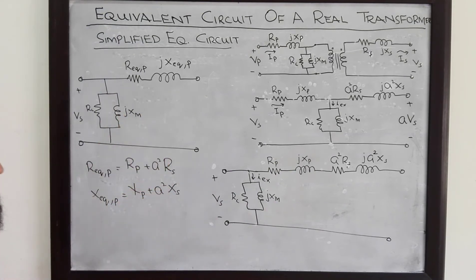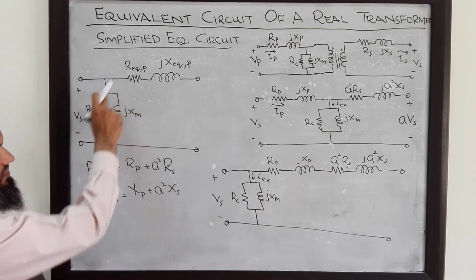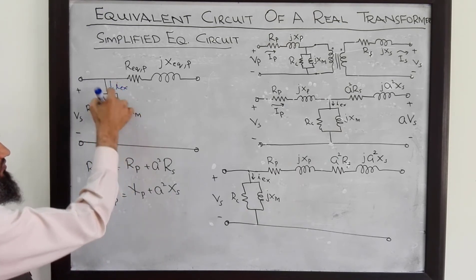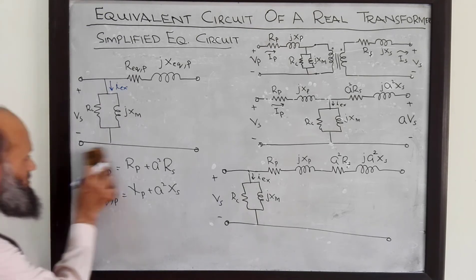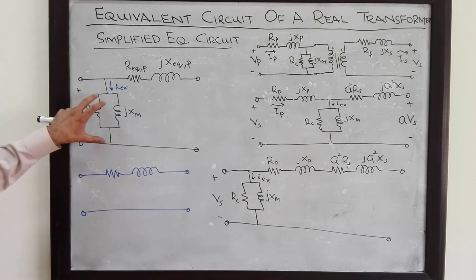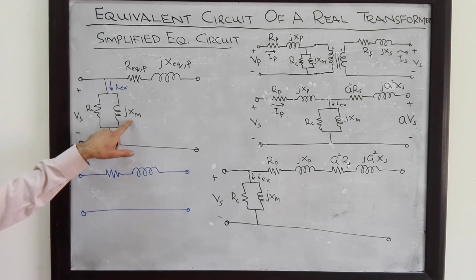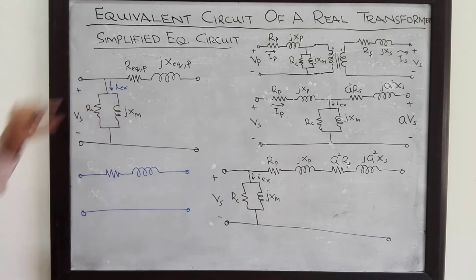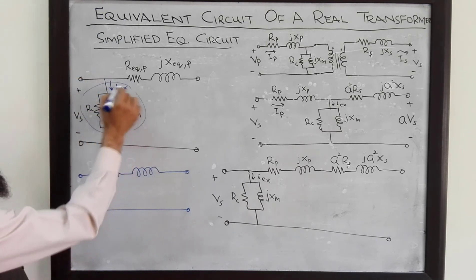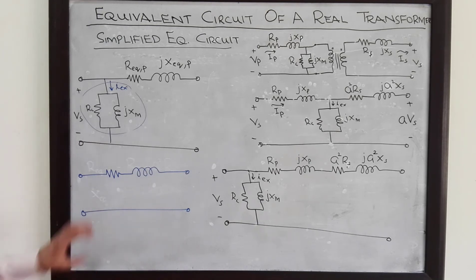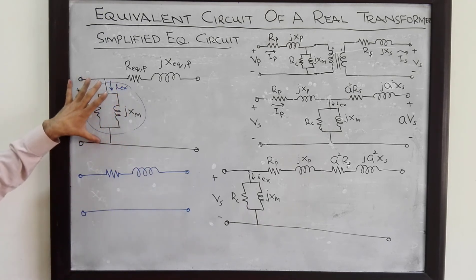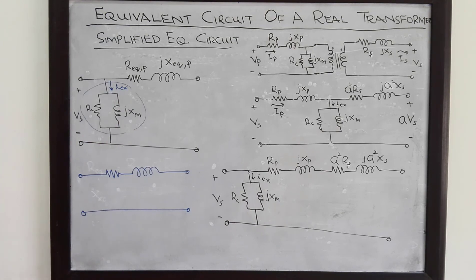The procedure for referring to the secondary side is quite similar — I leave that part for your homework. Another simplification that can be done is that if we have a good design of a transformer, the excitation current will be very, very small. So we can further simplify by ignoring this branch, because this resistance is very high, this inductive reactance is very high, and this current is very small — we can just omit this branch. This gives a further simplified equivalent electrical circuit, though it is even less accurate. Generally, we shall be using this equivalent circuit for our analysis in this course.